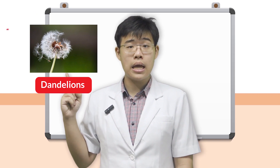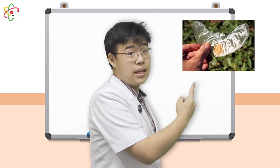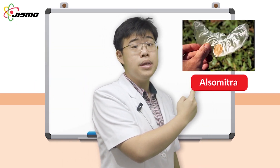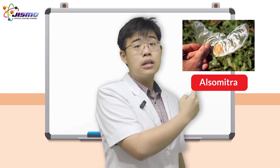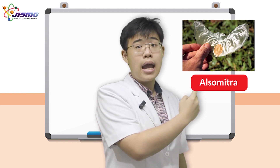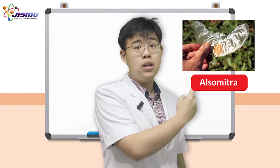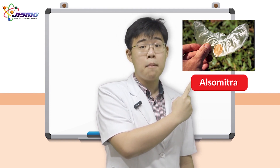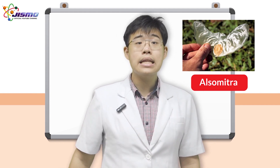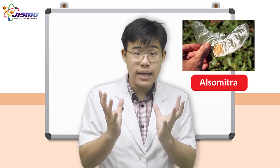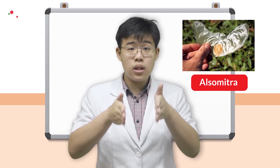This is a dandelion, but today we're not going to focus on the dandelion, but on this plant. This is called the Alsomitra. It is found in the tropics and originates from Java, Indonesia. This plant is part of the gourd or cucumber family, and it grows vines to creep up tall trees and spread its seeds, as shown in the video.